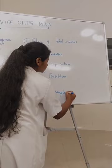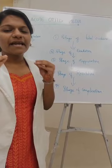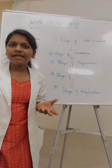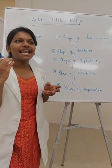The stage of tubal occlusion is characterized by a blocked ear. The patient will present to the OPD with a complaint of slight earache. The main signs are a retracted tympanic membrane with a prominent lateral process of malleus and there will be loss of light reflex.